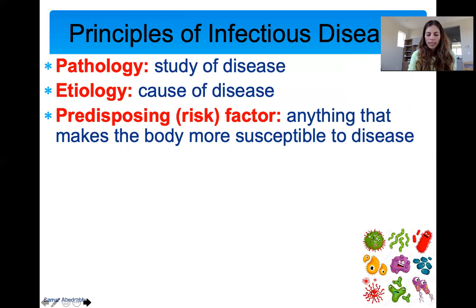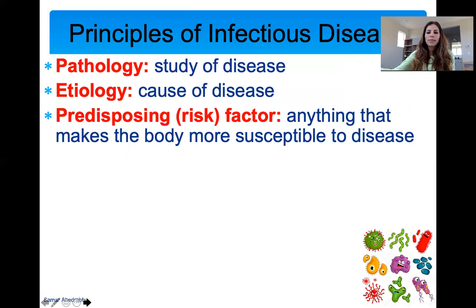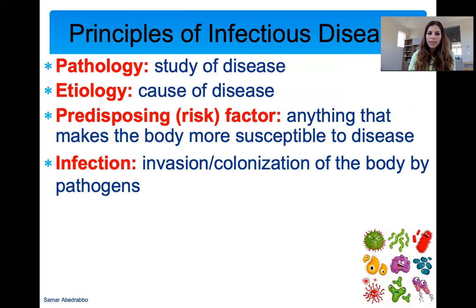A predisposing factor, or risk factor, is anything that makes your body more susceptible to getting a disease. For example, one risk factor for being more prone to UTIs is being female — female anatomy makes you more at risk. Another example: people with heart conditions are more at risk of getting severe COVID-19 infections. Having heart conditions, diabetes, or asthma puts you at a predisposing risk factor.